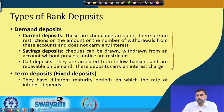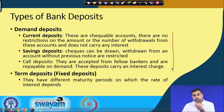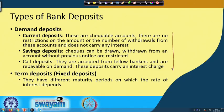Then we have term deposits, more popularly known as fixed deposits. There are different maturity periods — fixed deposits can be made for 2 months, 6 months, 2 years, 3 years, or 1 year. Depending upon the term to maturity, the rate of interest varies — the longer the term to maturity, the higher the rate of interest, but it has a certain limit after which the interest rate does not vary. These are the two ways deposits are basically defined for commercial banks.